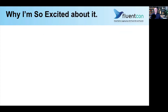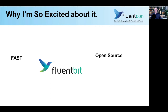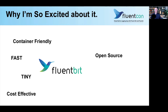So, why am I so excited about it? It's fast. It's developed in C, developed to run in a vetted system environment. It's open source — you can look and see how it runs and contribute to it. It's container-friendly and runs great inside a container; I run it on Fargate. It's tiny, very low resource usage. It's very cost-effective — I can run multiple instances of FluentBit, each doing its own thing, without impacting the others at a very reasonable cost.